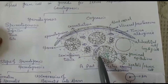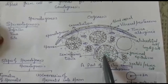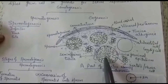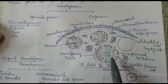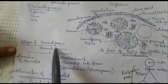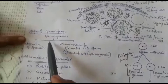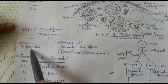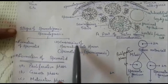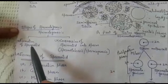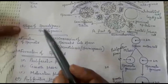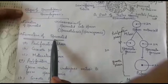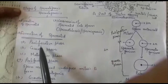Within the seminiferous tubules there are different stages: spermatogonia, primary spermatocyte, secondary spermatocyte, and in the center there are sperms. Spermatogenesis involves two main stages: first, formation of spermatid, and second, conversion of spermatid into sperm.